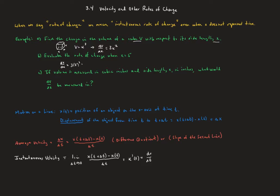So we would say then that instantaneous rate of change of the volume with respect to x is going to be 3 times 5 squared, which is 75. In part C, it says if the volume is measured in cubic inches and the side length is measured in inches, what would dv dx be measured in?